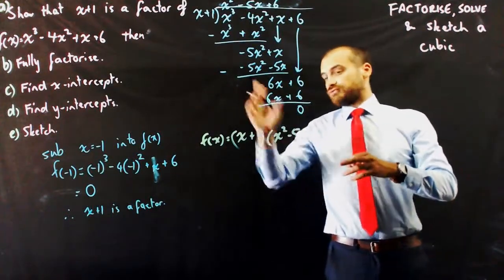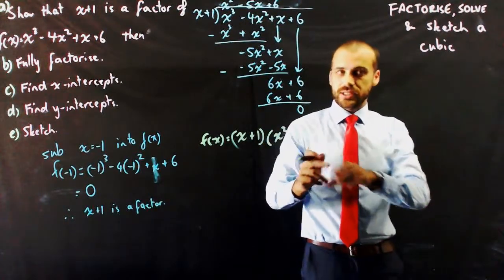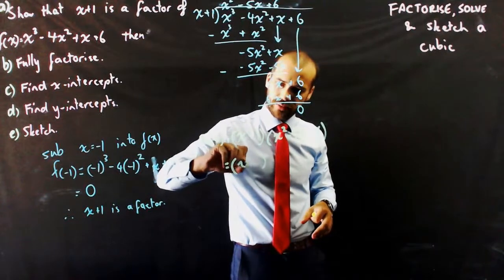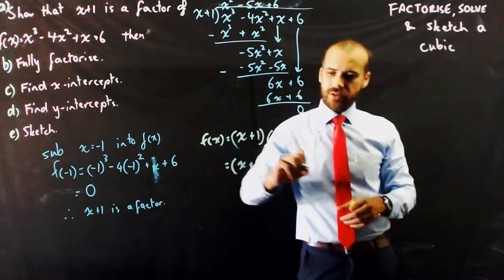Okay. Now it says fully factorize and we should look at x squared minus 5x plus 6 and realize that that is a quadratic that can also be rewritten as a set of brackets.